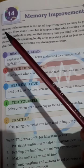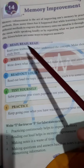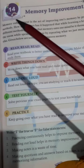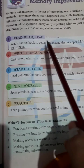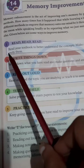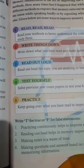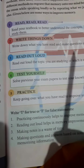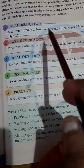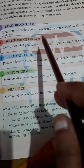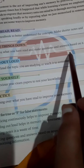You can improve your memory by applying these steps. First: read your textbook to better understand the concepts. Second: make shorter notes and study them. Write things down — what you have read — and make questions and answers based on it.